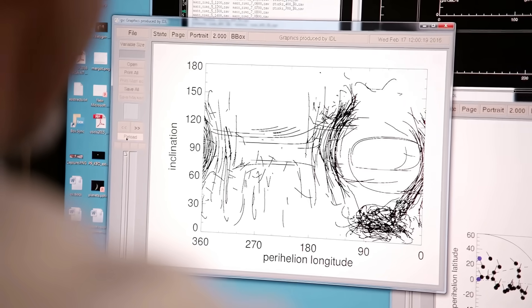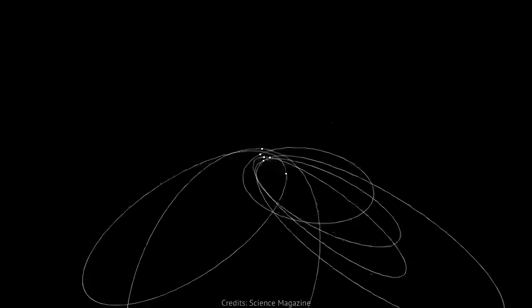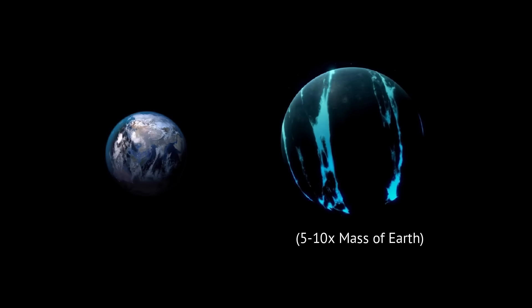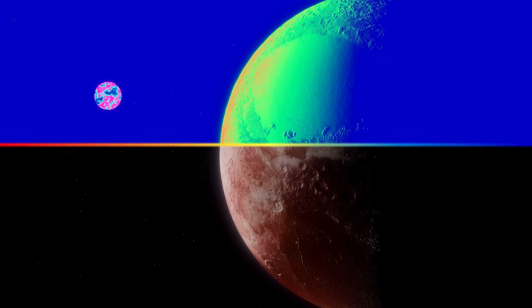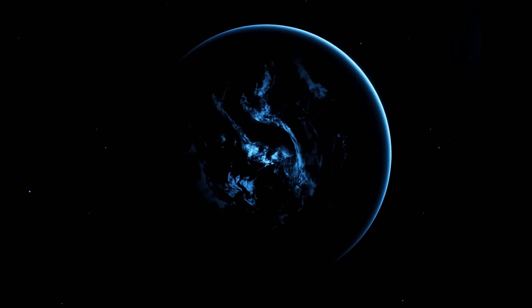When Mike and Konstantin followed the data, it led them to a wild possibility. The only thing that could explain the strange orbits of these Kuiper Belt objects was a hidden planet, something five to ten times the mass of Earth, far beyond Pluto. So far, in fact, that we might never see it with visible light.